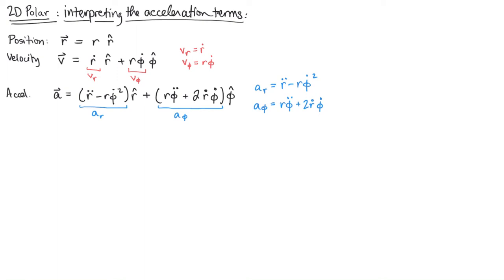Hello again physics friends! Last time we were together we derived the position, velocity, and acceleration of an object in polar coordinates. We looked at time derivatives of those unit vectors r hat and phi hat and we ended up with this quite complex acceleration vector. The goal of this video is to break down each of the terms in the acceleration to get some intuition for what each one does and the physical meaning of each one.